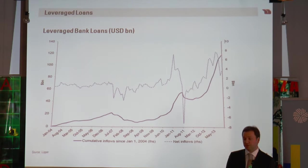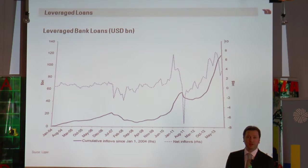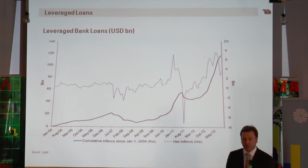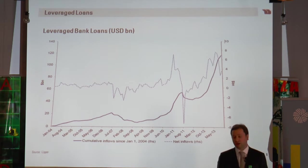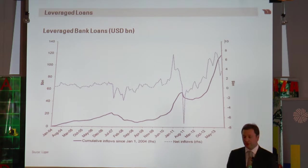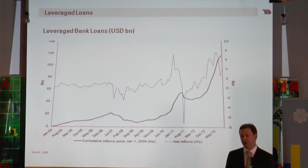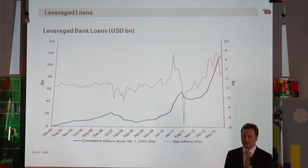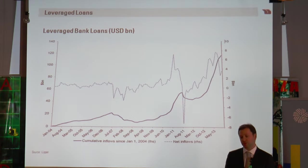Another market that has seen huge inflows is the leveraged loan market. It didn't see much outflow last year, contrary to other markets, because leveraged loans are generally floating rate. In an environment where rates go up, investors like structures that are floating. Unfortunately, this is also a less liquid market. When you invest in a leveraged loan, you should expect to hold it to maturity — contrary to a high yield or high grade bond where you have more active markets. Leveraged loans are essentially loans to poor quality companies, and once you enter one, trading will be expensive.